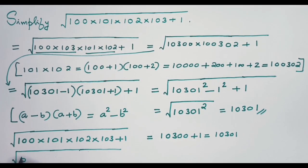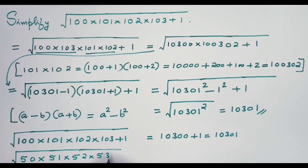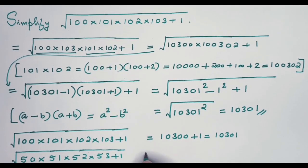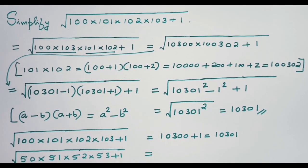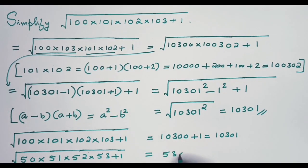Let me choose 50, 51, 52, 53 plus 1. What did I say before? You multiply these two. See, 53 multiplied by 50. Then what did I say? Just add 1.